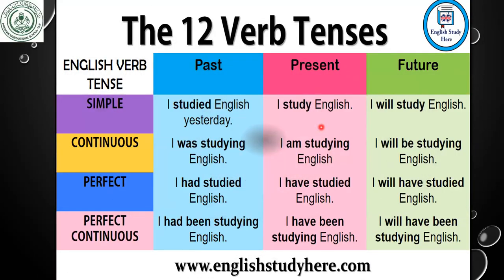For translation, dear students, first of all you have to have a grip on all your tenses. We basically have three tenses: present, past, and future. Each tense contains four kinds. So in total we have 12 tenses. In this table you can see the 12 verb tenses: simple past, simple present, and simple future. 'I studied' — 'studied' is the second form of the verb used in past tense. 'I study' is in present tense, first form. 'I will study' is the future.